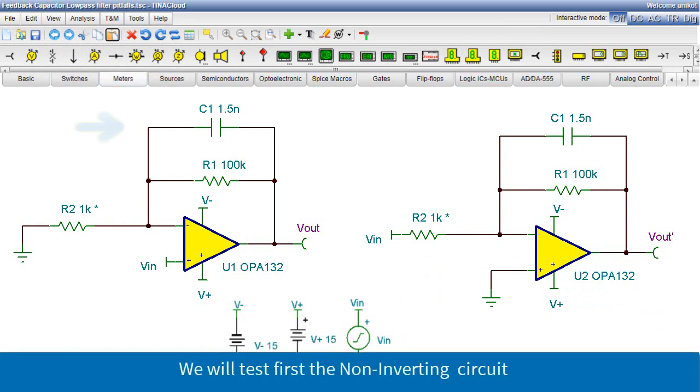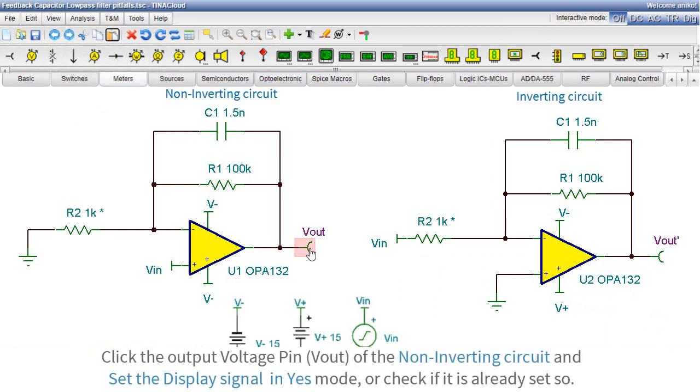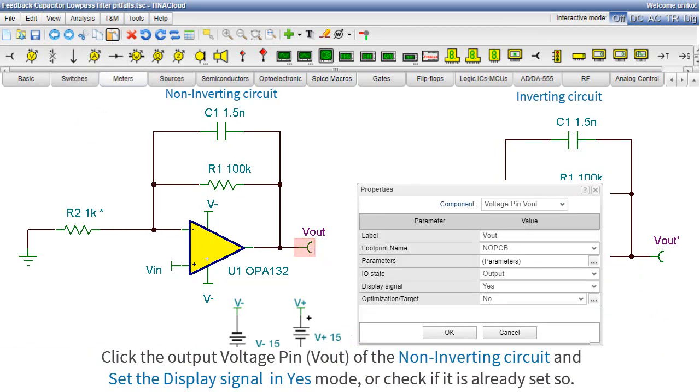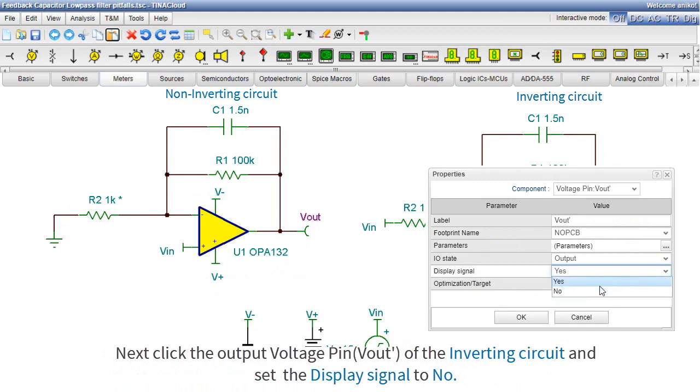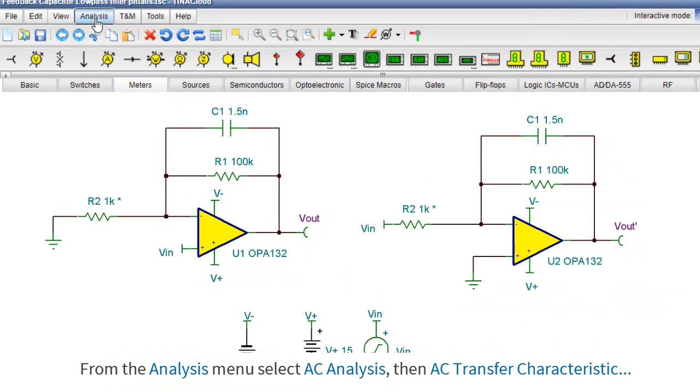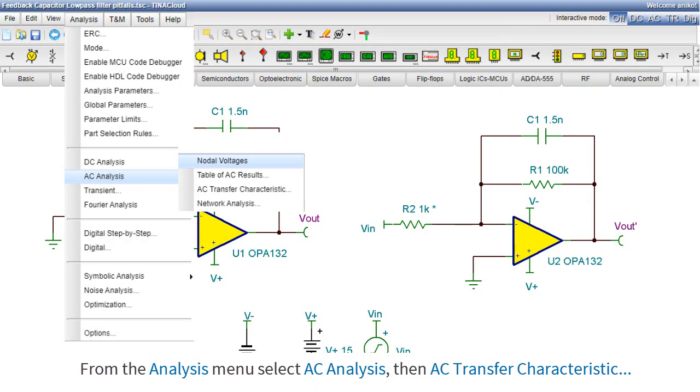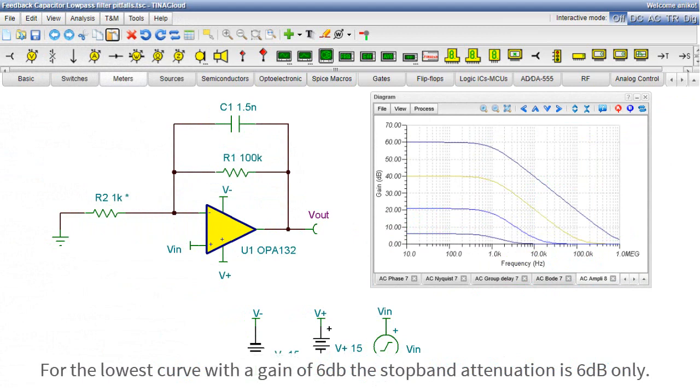We will test first the non-inverting circuit. Click the output voltage pin of the non-inverting circuit and set the display signal to Yes mode or check if it is already set so. Next, click at the output voltage pin of the inverting circuit and set the display signal to No. From the Analysis menu, select AC Analysis, then AC Transfer Characteristic. For the lowest curve with a gain of 6 dB, the stop band attenuation is 6 dB only.